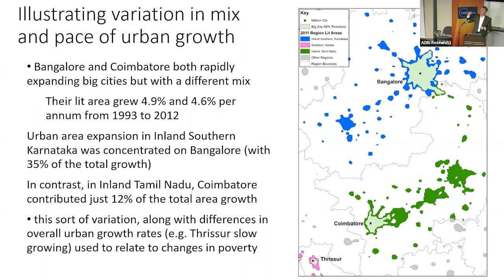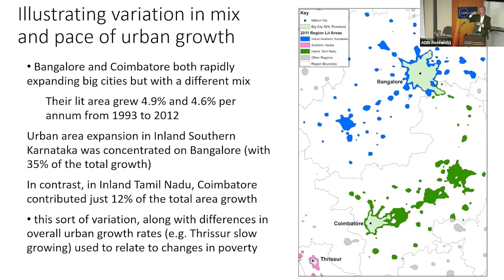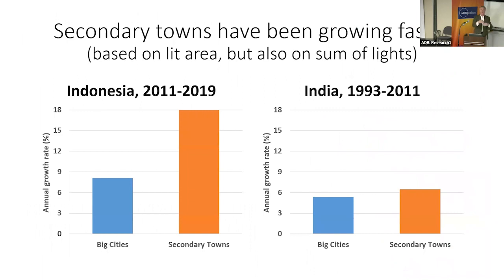Sometimes we have both Bangalore and Coimbatore — both big cities growing at roughly the same rate of around 4.6 to 4.9% in terms of expanding area. But they were growing in quite different ways. In inland southern Karnataka, Bangalore accounted for 35% of total regional growth — growth focused on the primate city. In inland Tamil Nadu, most of the growth was actually outside the primate city, coming from other parts of the NSS region. This variation in the mix of growth — sometimes concentrated on the big city, sometimes from secondary towns — enables us to examine which type of growth is associated with poverty reduction.